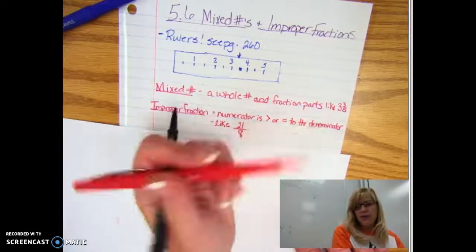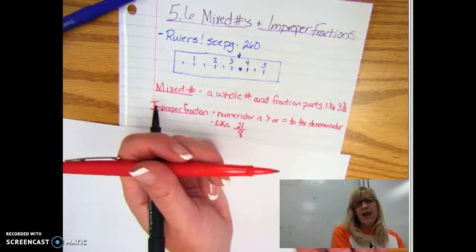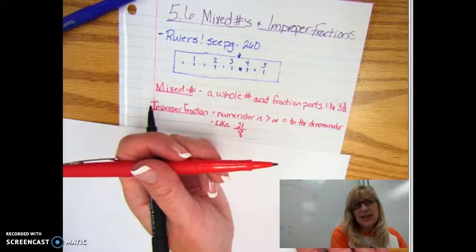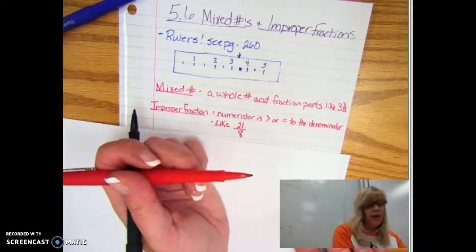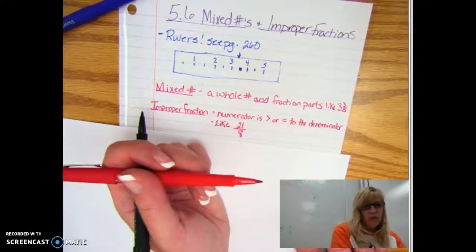I put like three and three-fifths, but you could have one hundred and seventy-eight seventy-ninths, you could have one million and one-half.